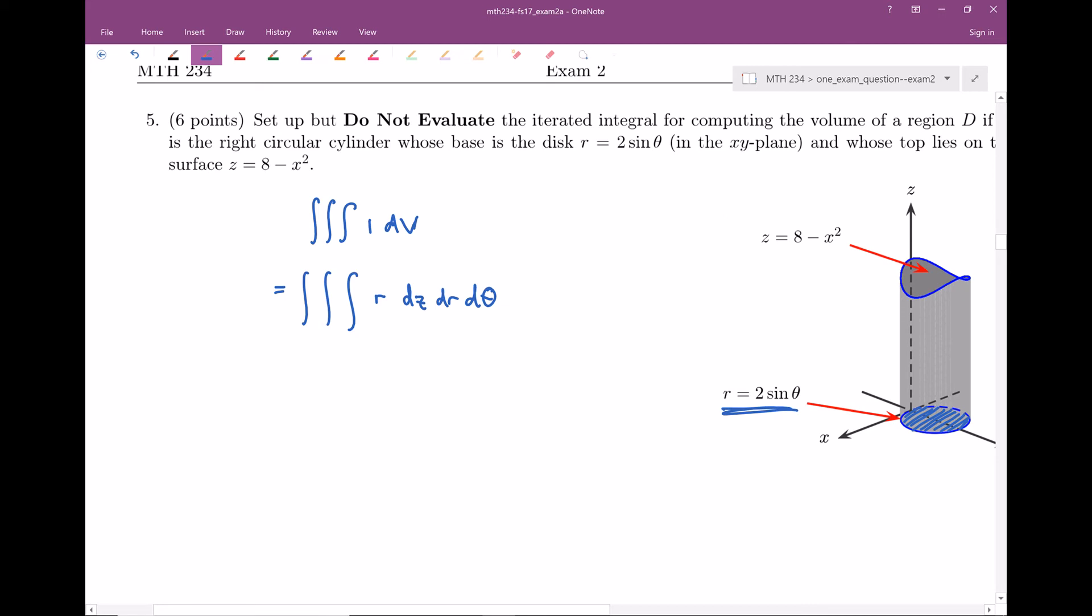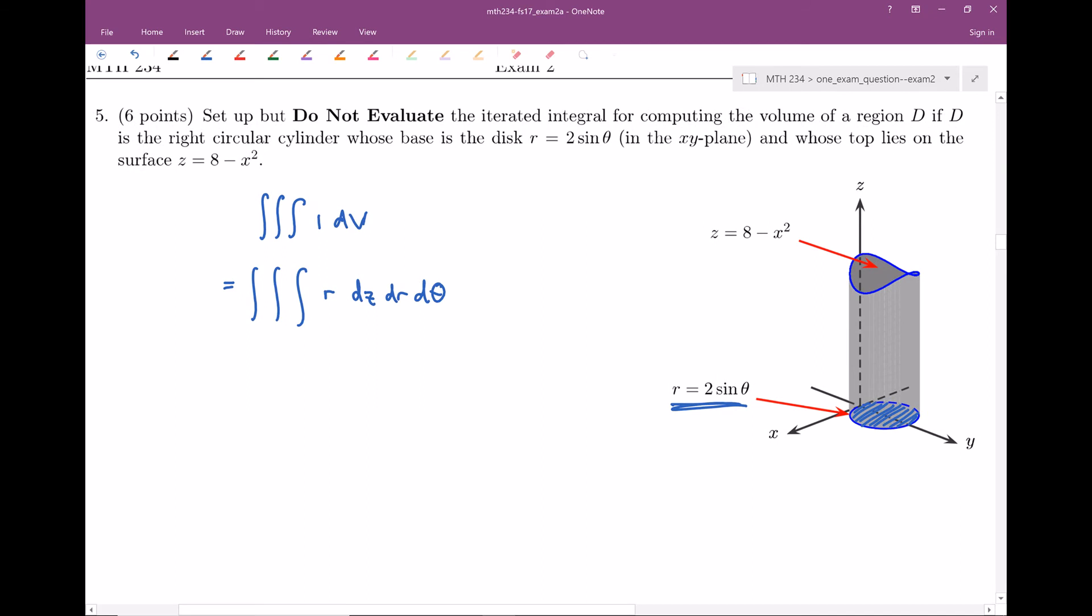Now let's go ahead and start figuring out what our bounds should be. So for z, imagine that I'm traveling in the z direction. The first thing that I seem to enter through is the plane z equals zero, the xy plane. And then we seem to exit through this top surface, given by z equals eight minus x squared.